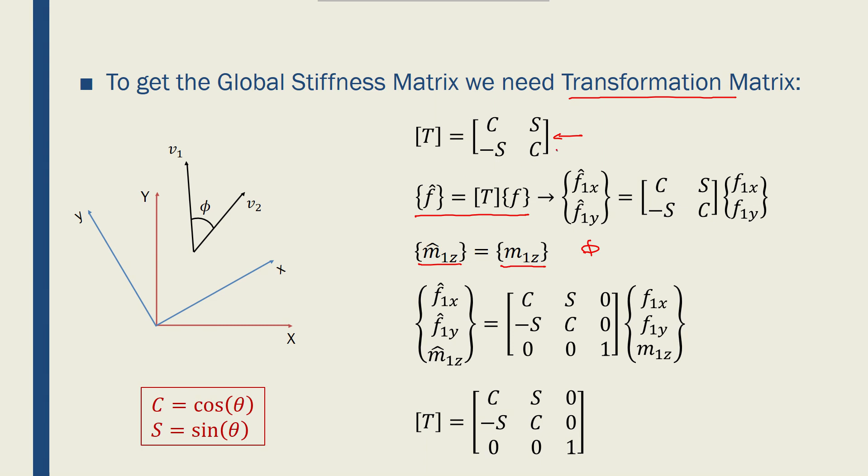So expanding this 2 by 2 transformation matrix to a 3 by 3 gives me a matrix like this: f1x equals c times f1x plus sin times f1y plus zero. f1y in local equals minus sin times f1x in global plus cos times f1y in global, and m1z in local equals m1z in global. So I can write a 3 by 3 transformation matrix for a frame element that would convert it from local to global stiffness matrix.